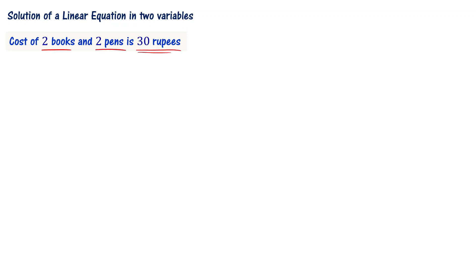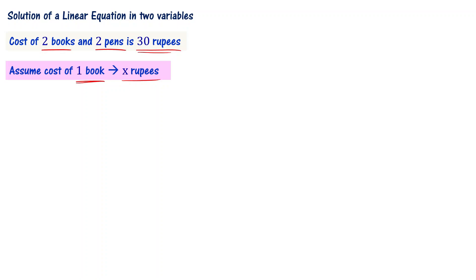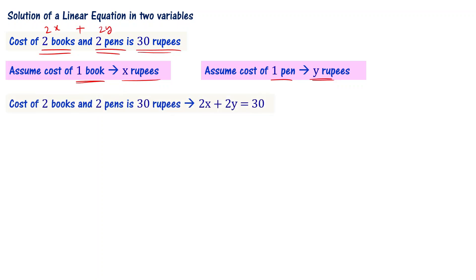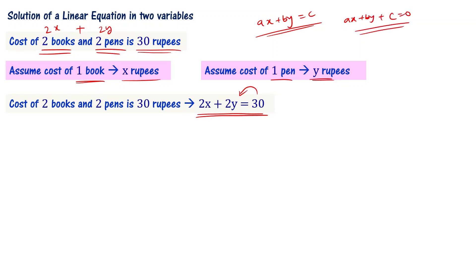Let us start with this problem: cost of two books and two pens is 30 rupees. Let me assume the cost of one book equals x rupees and the cost of one pen equals y rupees. Cost of two books is 2x and two pens is 2y, so 2x plus 2y equal to 30. This is the linear equation in two variables, in the form ax plus by equal to c.